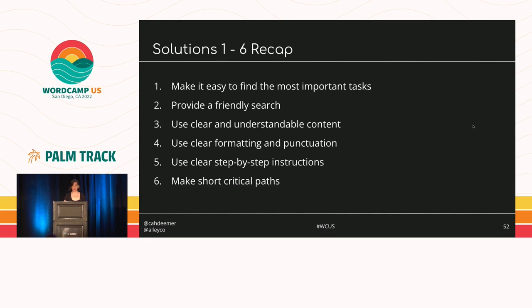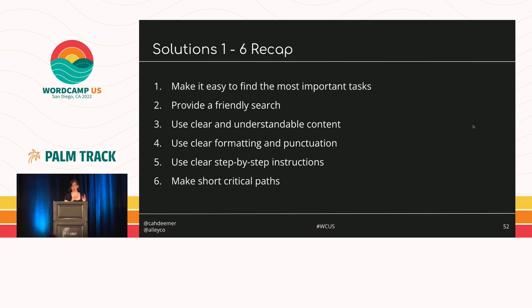Now that we're halfway through, let's recap solutions one through six. One: make it easy to find the most important tasks. Two: provide a friendly search. Three: use clear and understandable content. Four: use clear formatting and punctuation. Five: use clear step-by-step instructions. Six: make short critical paths.